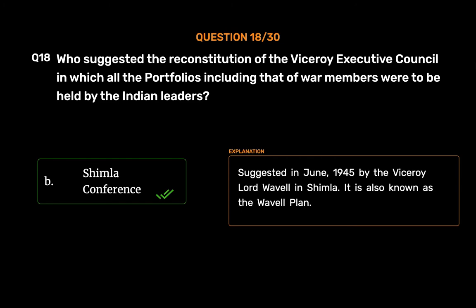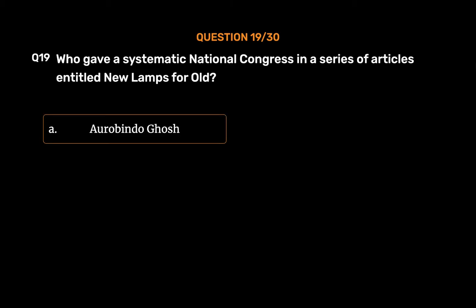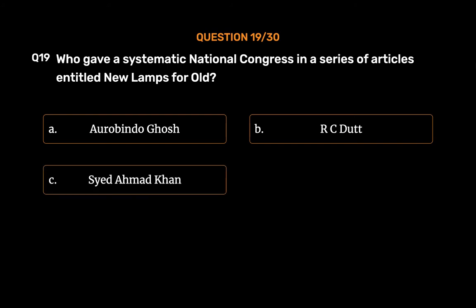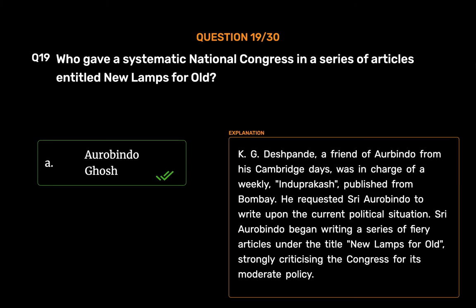Question No. 19. Who gave a systematic critique of the National Congress in a series of articles entitled 'New Lamps for Old'? Option A, Arvind Ghosh; Option B, R.C. Datta; Option C, Sayyad Ahmad Khan; Option D, Virarad Havachari. The correct answer is Option A, Arvind Ghosh. K.G. Deshpande, a friend of Aurobindo from his Cambridge days, was in charge of a weekly, Indu Prakash, published from Bombay. He requested Sri Aurobindo to write upon the current political situation. Sri Aurobindo began writing a series of fiery articles under the title 'New Lamps for Old,' strongly criticizing the Congress for its moderate policy.